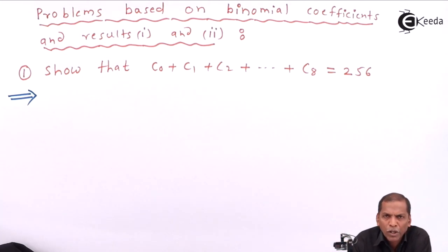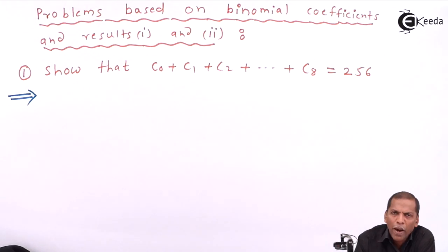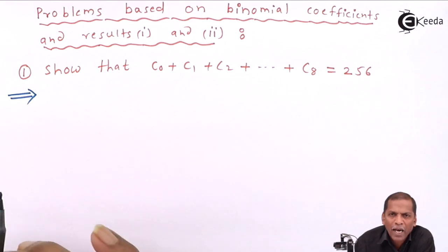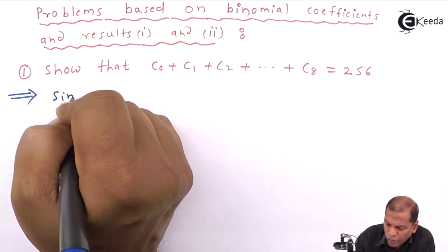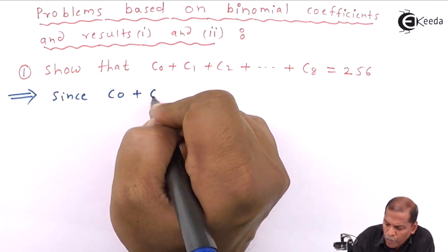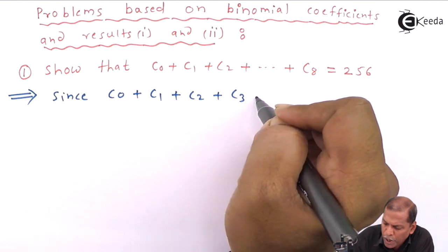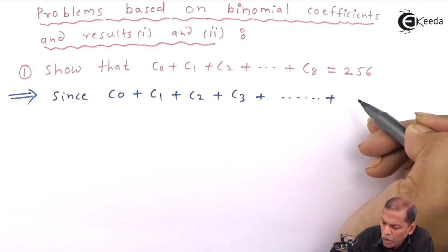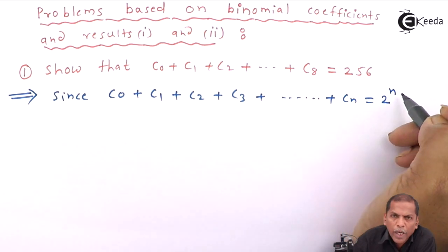Now let's see the solution. The solution is quite simple. Here we have to use Result 1, which is related to the binomial coefficients, which states that c0 plus c1 plus c2 plus c3 going on plus cn is equal to 2 raised to n.